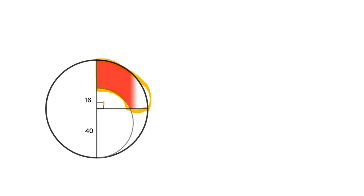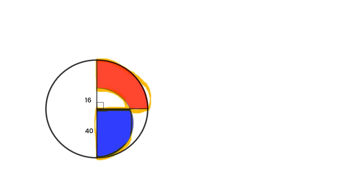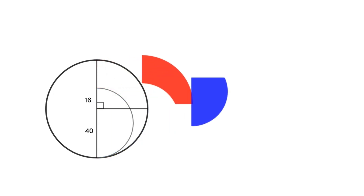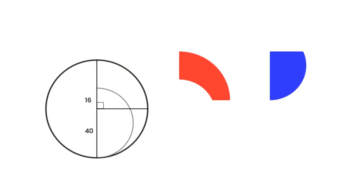We get two shaded areas in the diagram — one is red and the other is blue. So which color's area is larger?